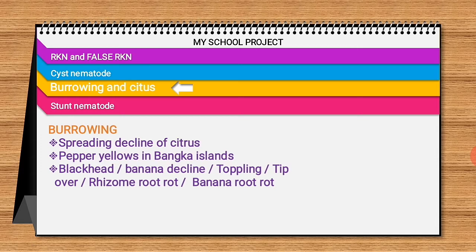Regarding the burrowing nematode, spreading decline of citrus is a major problem. As the name suggests, this trouble gradually spreads through the grove from the first diseased trees. In black pepper, it causes pale yellow leaves that droop and fall — this is known as pepper yellows in Bangkok and other regions.